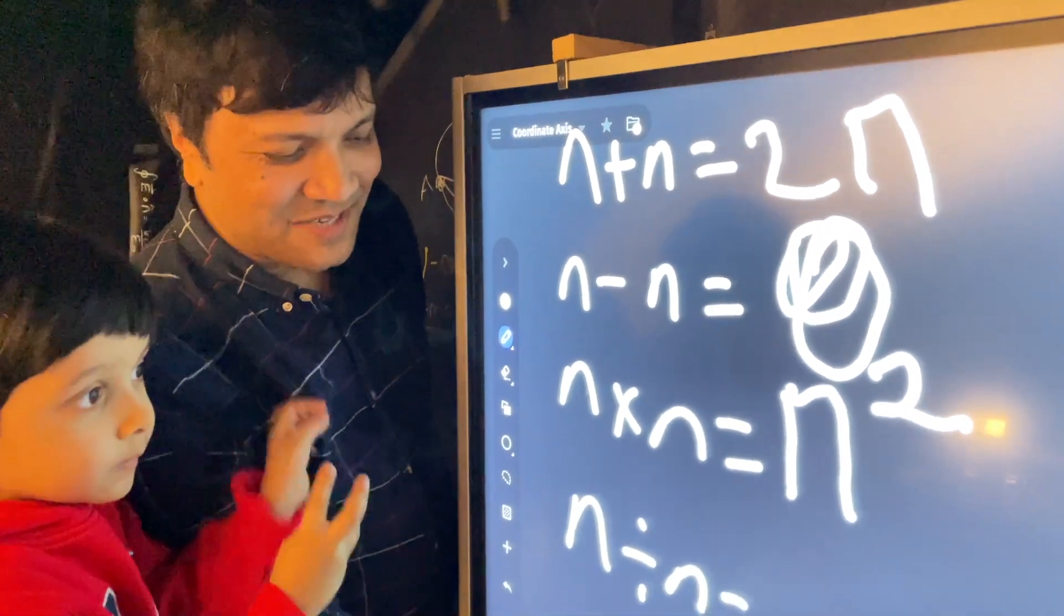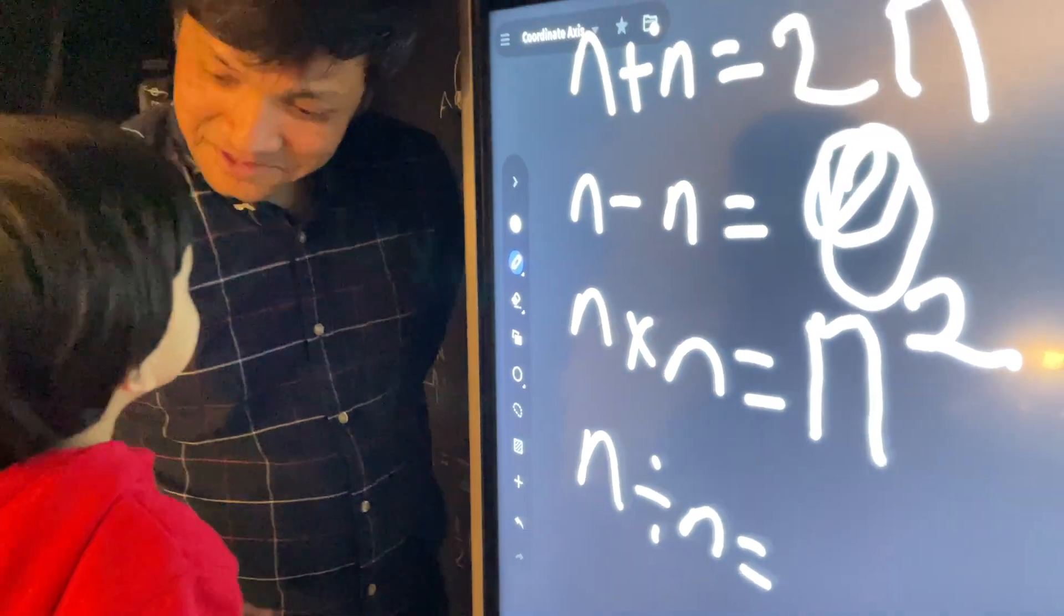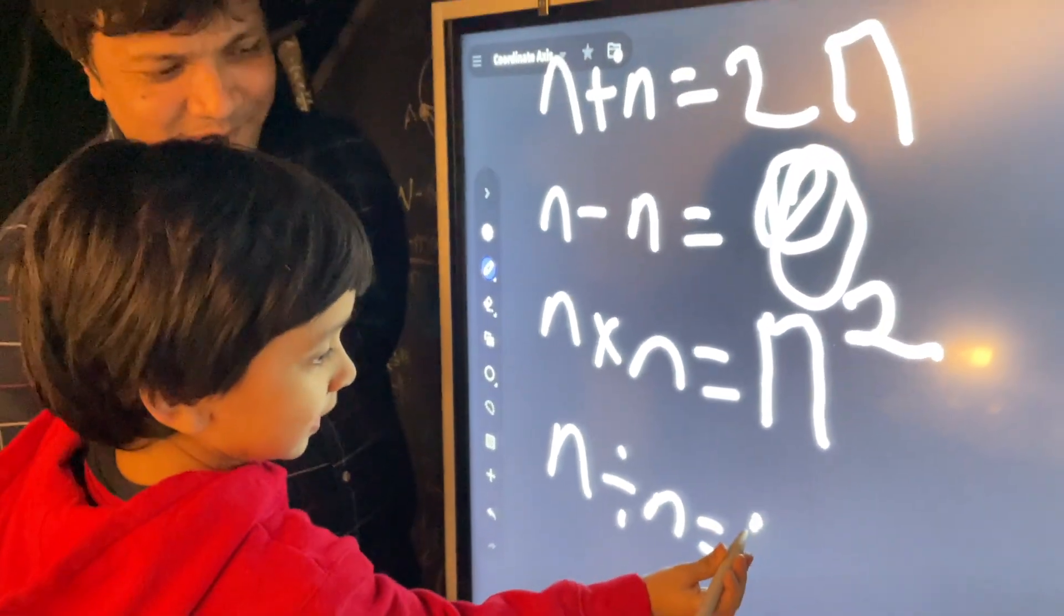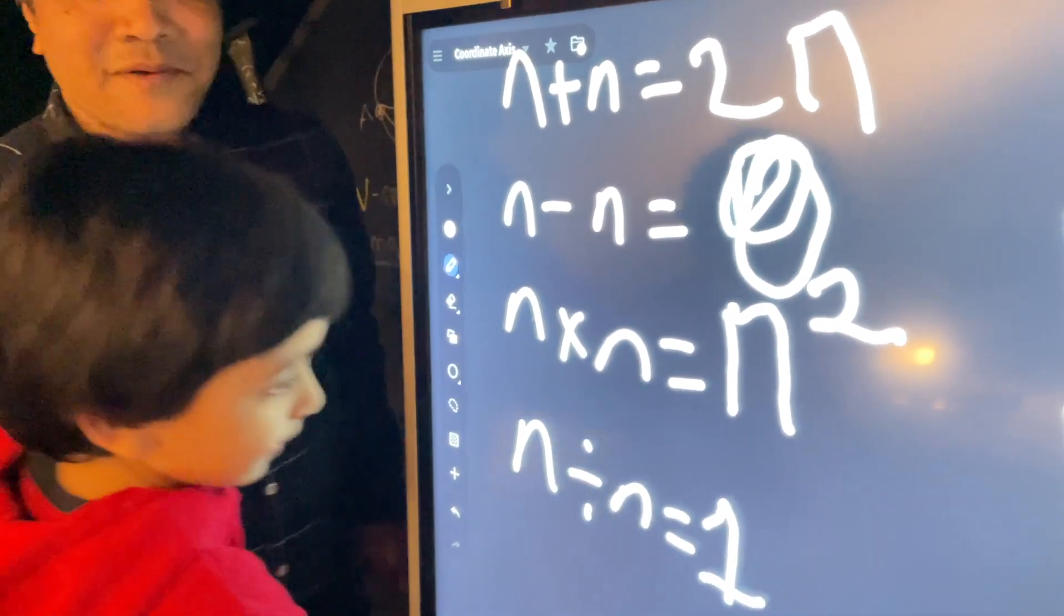N divided n. Can you tell me what is n divided n is? One. Can you write it? Like this. All right.